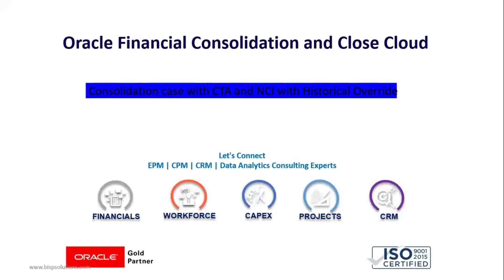Hello everyone. Welcome to BISP Solutions. I'm Tanvi Arora and I'm working here as a functional consultant. In today's video, we are going to see the consolidation case with CTA — that is Currency Translation Account — and with non-controlling interest, that is minority interest, with the effect of historical override.